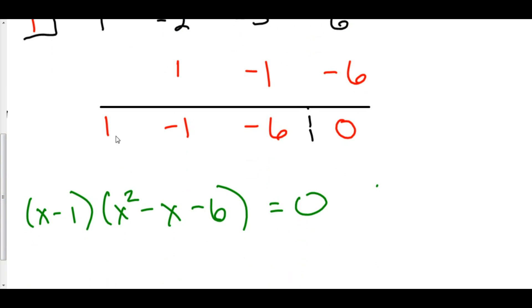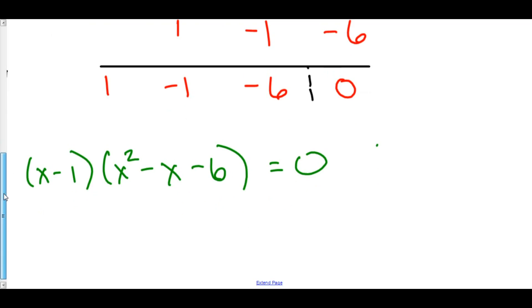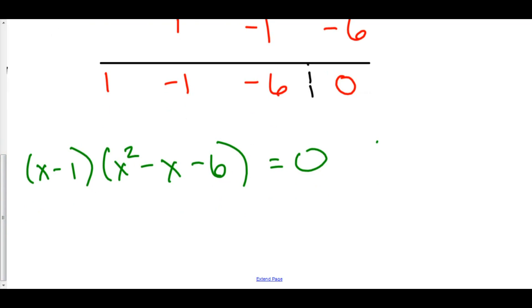And moreover, this is the other factor right here. And of course, we can now factor this other factor. That factor is x - 1 times—two numbers that multiply to -6 and add to -1 are -3 and +2.